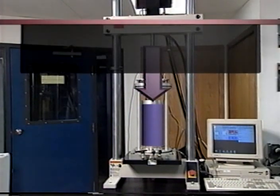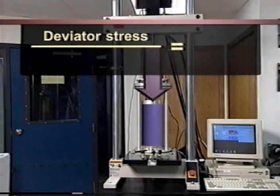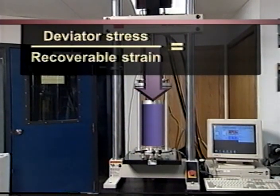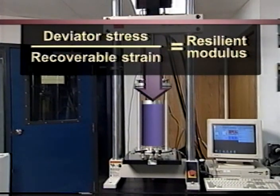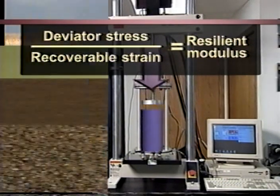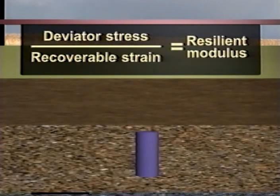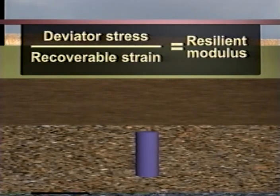If we divide the change in stress — which is also called deviator stress — by the resulting recoverable strain, we get a ratio of stress to strain. The name of this ratio is resilient modulus. Resilient modulus is a way of characterizing the stiffness of a material. When pavement designers know the subgrade's resilient modulus, they plug it into a model and come up with the thickness of the materials that will need to be put on top of the subgrade.